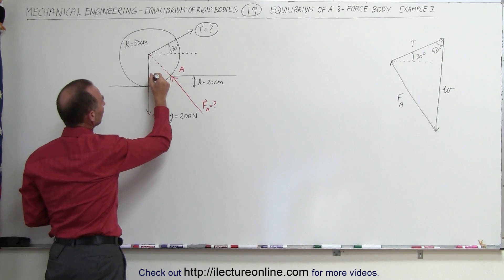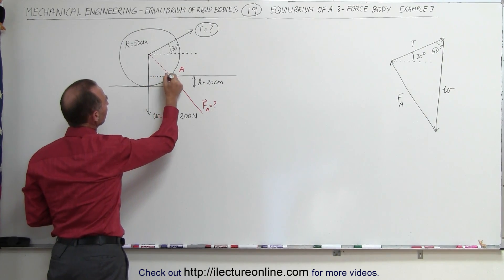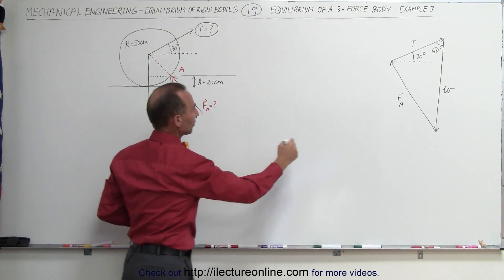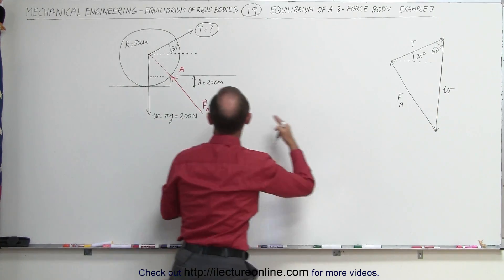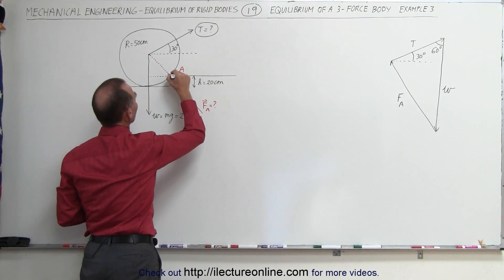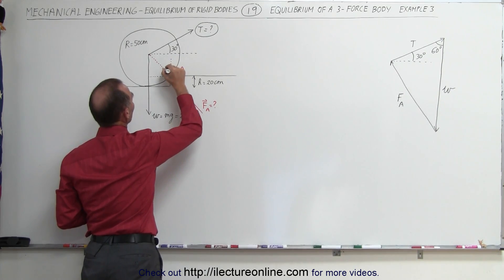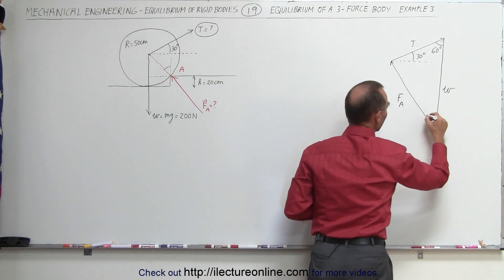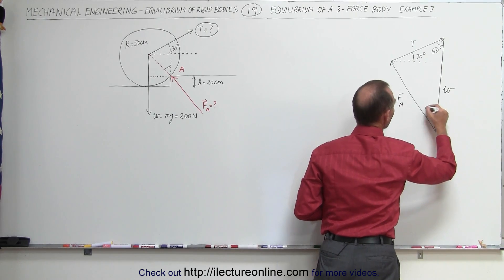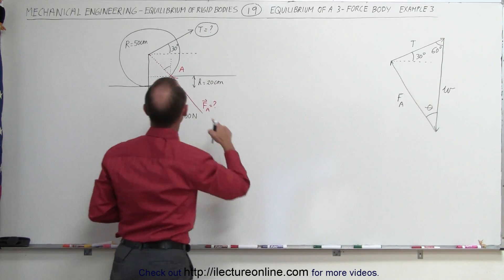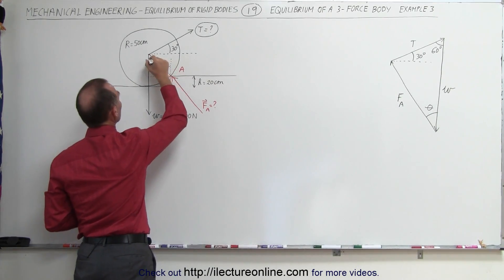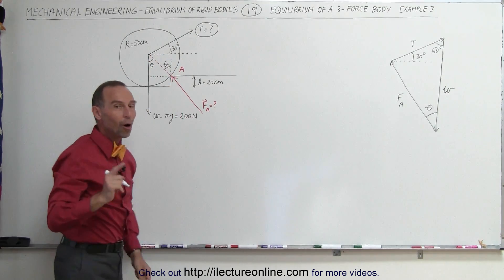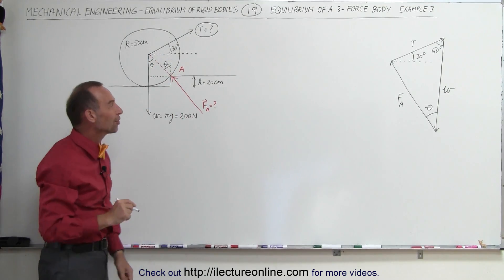If we draw a line directly across, notice that this angle relative to the vertical is the same as the corresponding angle on the other side. This angle is what we're looking for — let's call it theta, because we haven't used theta yet. This is the angle theta, which means the corresponding angle up here is also theta, because these are what we call alternate interior angles.